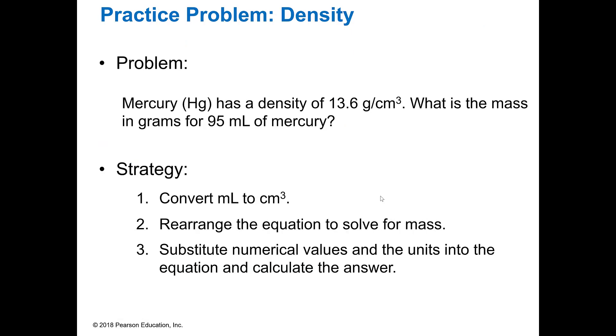This is an example problem of mercury. Mercury is one of the most dense liquids that we know of, and it has a density of 13.6 grams per cubic centimeter. One thing that we need to remember is a cubic centimeter is the same thing as a milliliter, so you can use those interchangeably.